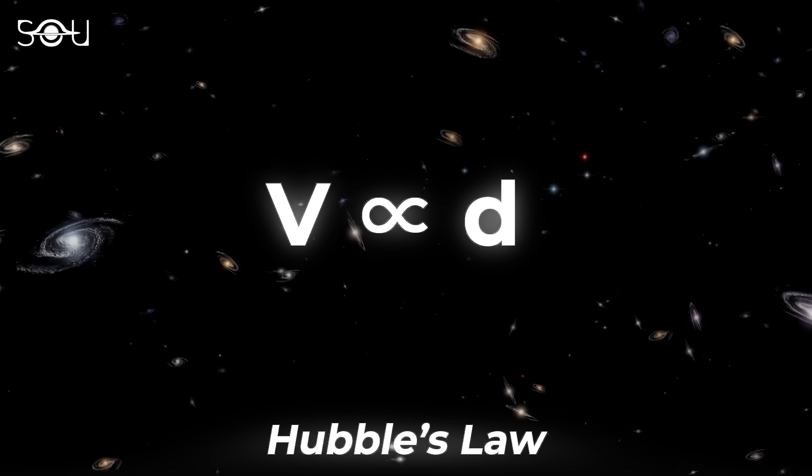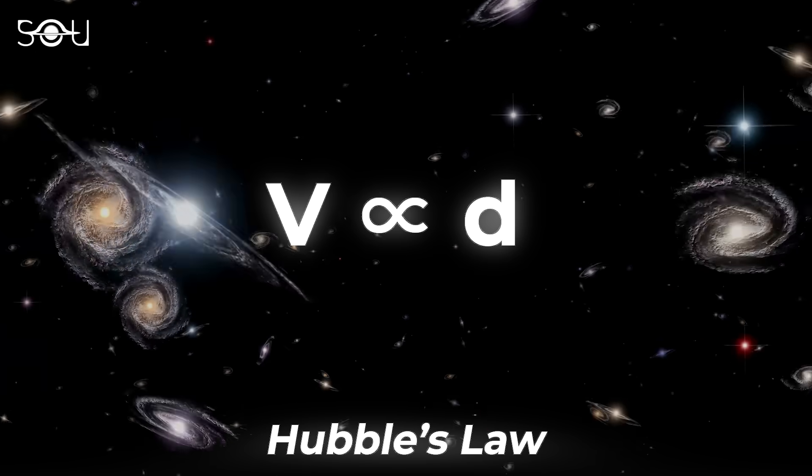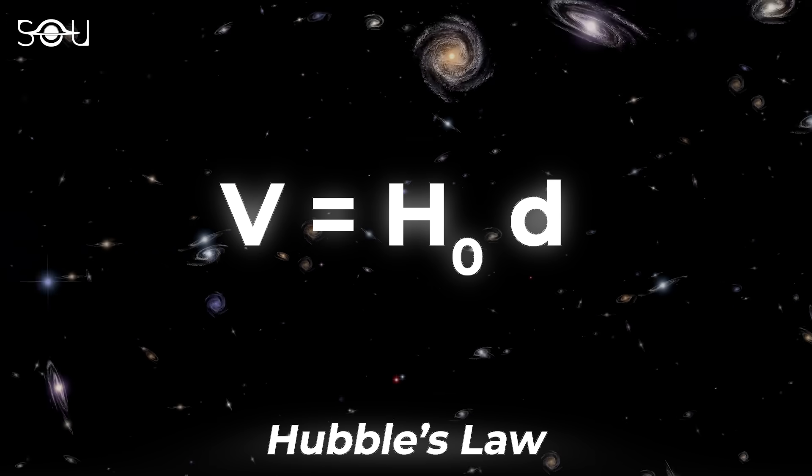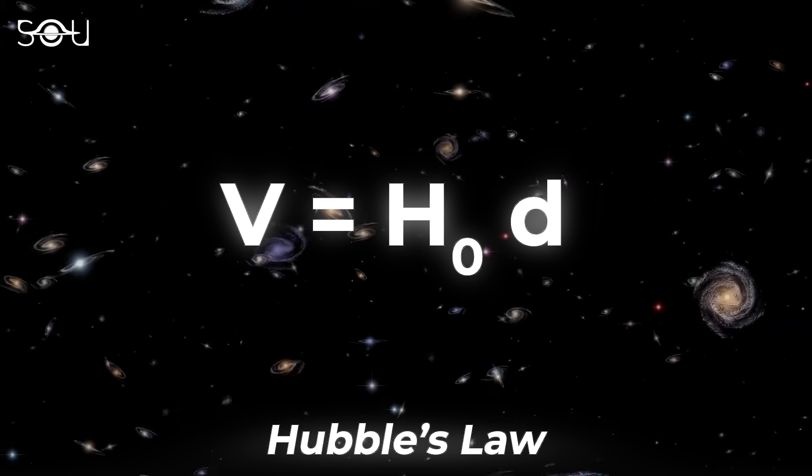Although this relation appears simple, it contains one of the universe's biggest mysteries. It's the number that equates the two sides, the Hubble constant. But why is this constant so critical for cosmologists? What answers can we get by measuring it precisely?